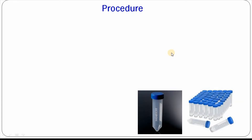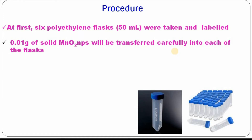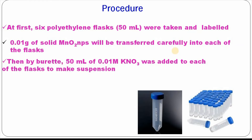Now, the procedure. This procedure is reproducible, so a new researcher can follow it and determine the point of zero charge. Several polyethylene flasks of 50 ml were taken and labeled. Then, 0.01 g of solid manganese dioxide powder was taken into each flask. Then, by burette, 50 ml of 0.01 molar potassium nitrate was added to each flask to make a suspension.